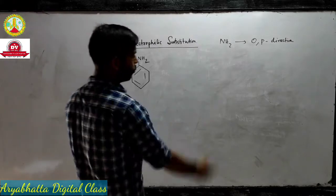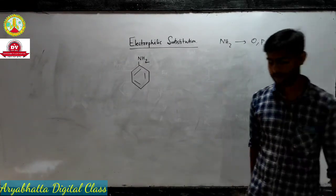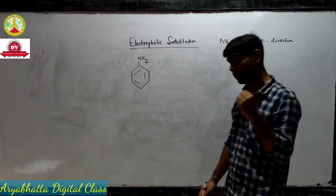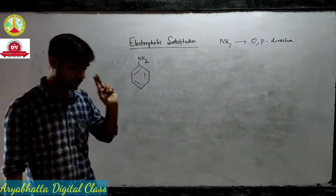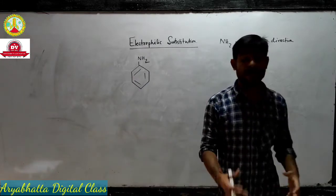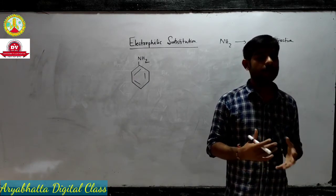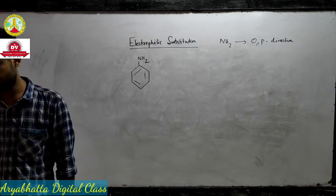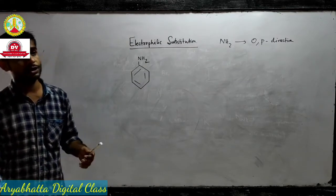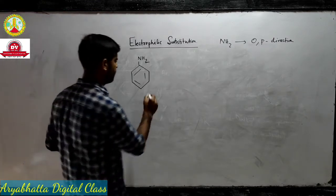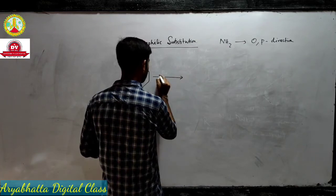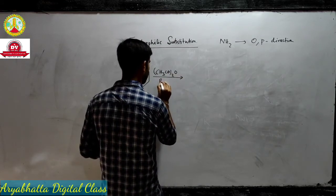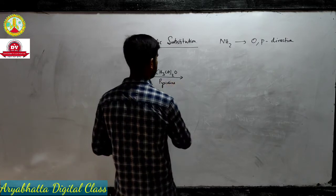We get 2,4,6-tribromoaniline. But if I want only the para-substituted product, I have to control the superactivity of this NH2 group. To do that, we use acetic anhydride in the presence of pyridine.